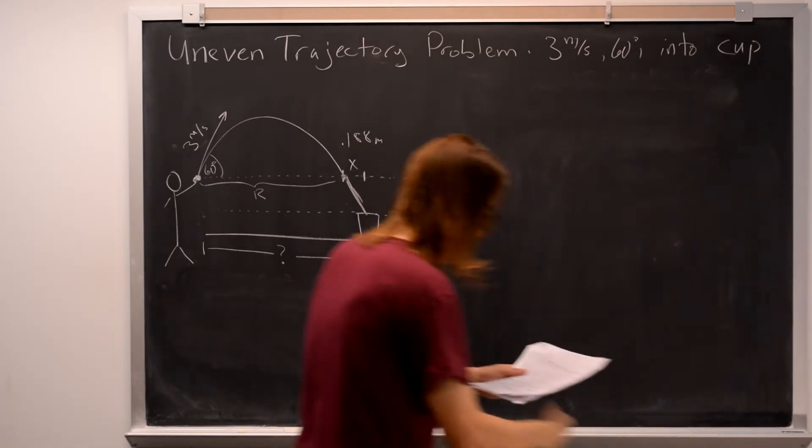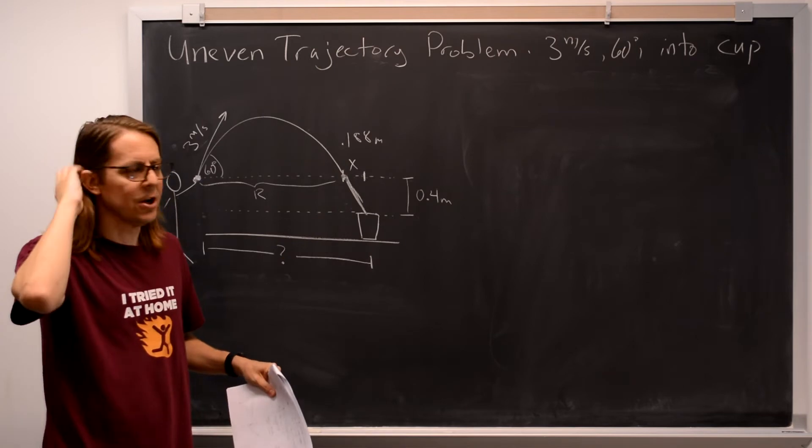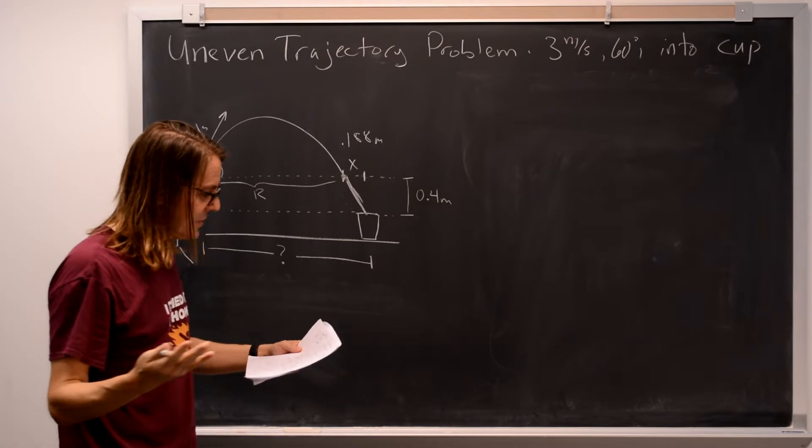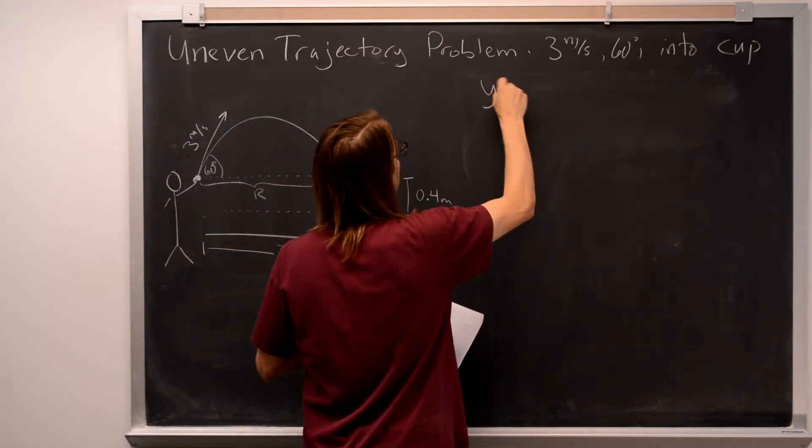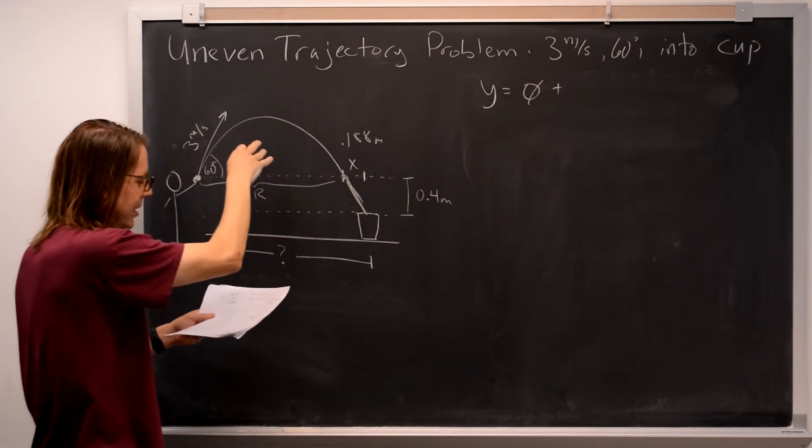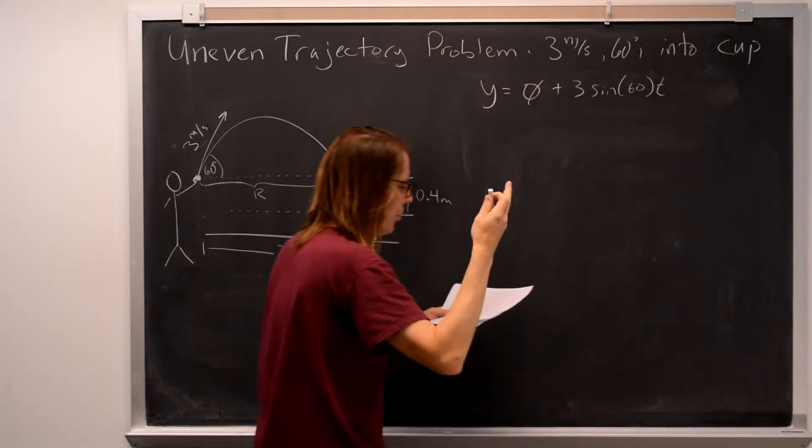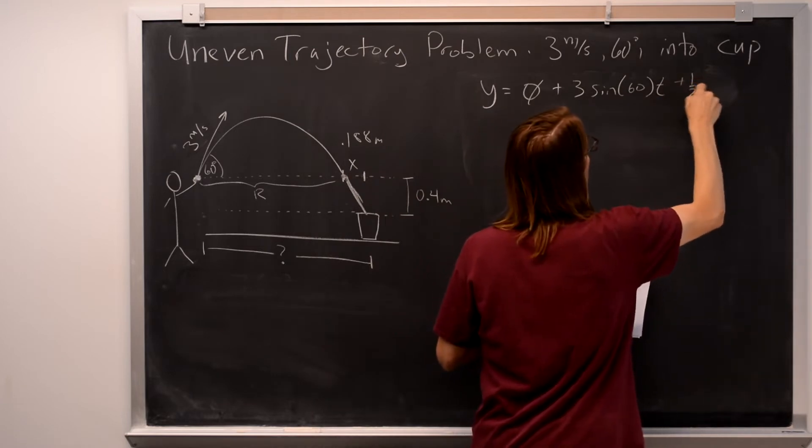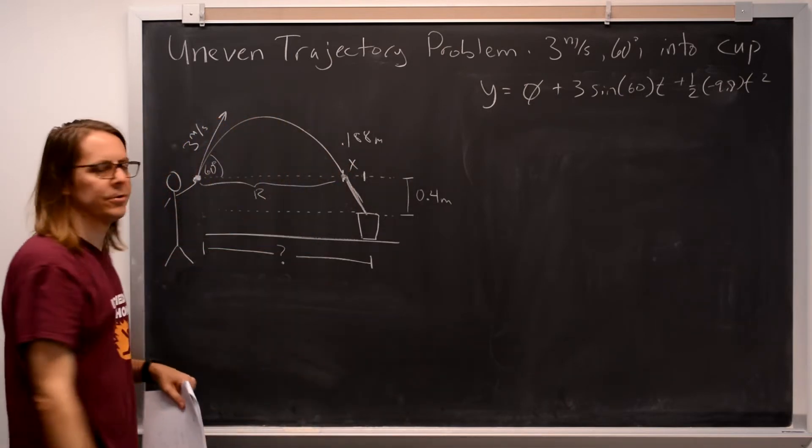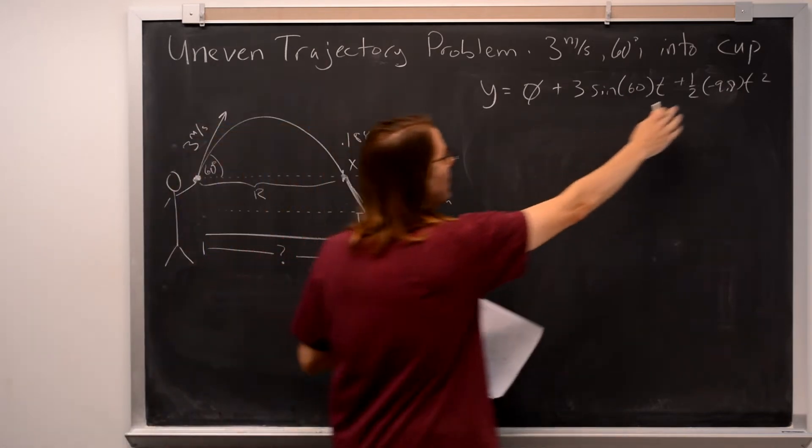But let me just get rid of all this and real quick say how else could we solve this. We could say this is a free particle going through a trajectory. I don't care if it's even or uneven. It has to follow the kinematics equations. So we could just say, let's write those. y equals y naught plus v y naught times time, so 3 times the sine of 60. That's v y naught t plus 1 half negative 9.8 t squared. That has to be true for the entire trajectory, not just for the even part. That's true until some other force intervenes and changes the acceleration.